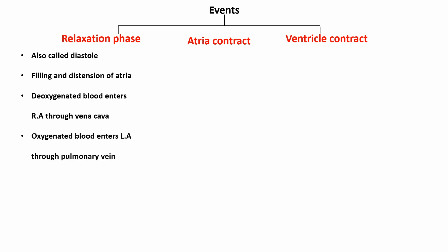Oxygenated blood enters the left atrium through the pulmonary vein, and then the diastole relaxation phase begins.